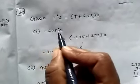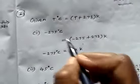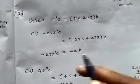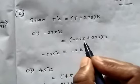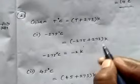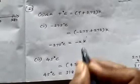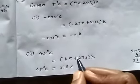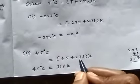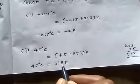First: minus 275 degrees Celsius. Applying the formula: minus 275 plus 273 equals minus 2 Kelvin. Second: 45 degrees Celsius. So 45 plus 273 equals 318 Kelvin.